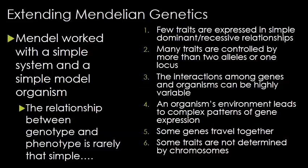Mendel's work with peas turned out to be using a very simple system and a very simple model. He developed his laws which, knowing what we know now, really should be considered more principles than laws because there are a great many exceptions. Many inherited traits result from modes of inheritance that differ from strict dominant and recessive relationships.